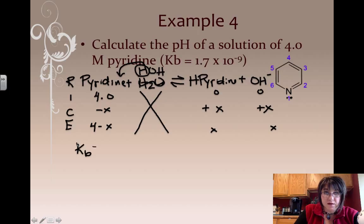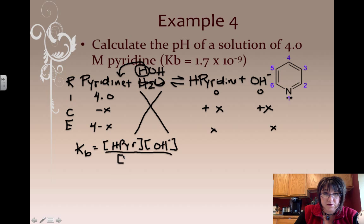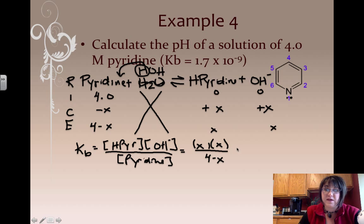So the Kb is going to be H-pyridine concentration times hydroxide ion concentration all over my equilibrium concentration of pyridine. According to my rice table, I get X times X on the top and 4 minus X on the bottom. Now how big do you think X is going to be? If the value of Kb is 1.7 times 10 to the minus 9, then we can assume that X is really tiny and 4 minus X is not going to be a measurable difference. So I take my X here and get rid of it.